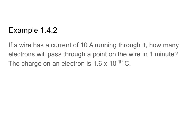Let's try a slightly more complicated problem. I have a wire with a current of 10 amps running through it, and I want to figure out how many electrons will pass through a point on that wire in one minute. I'm also given that the charge on an electron is 1.6 times 10 to the negative 19th coulombs. My givens: i equals 10 amps, t equals one minute or 60 seconds, and the charge on an electron e is 1.6 times 10 to the negative 19th coulombs.